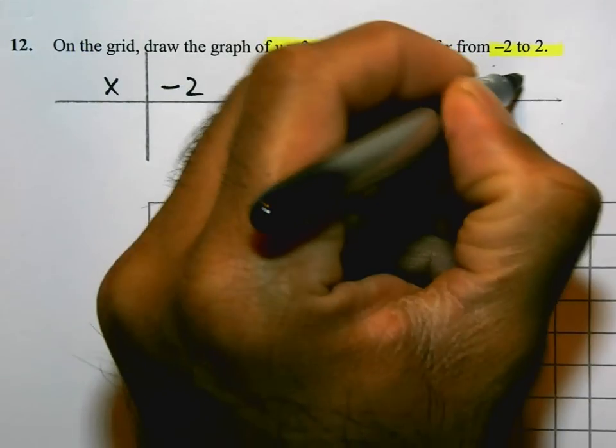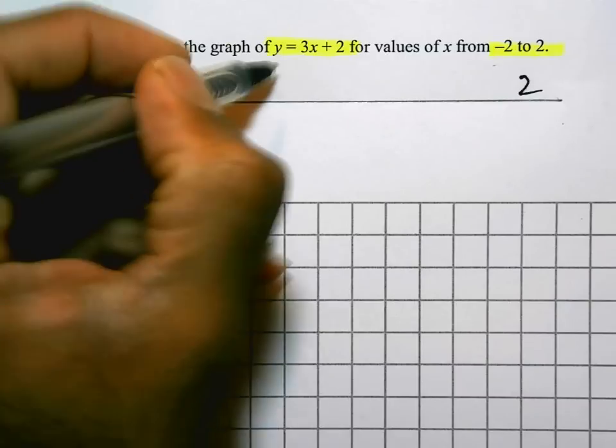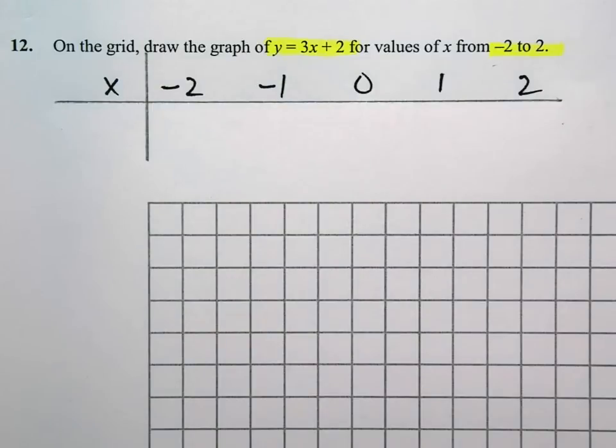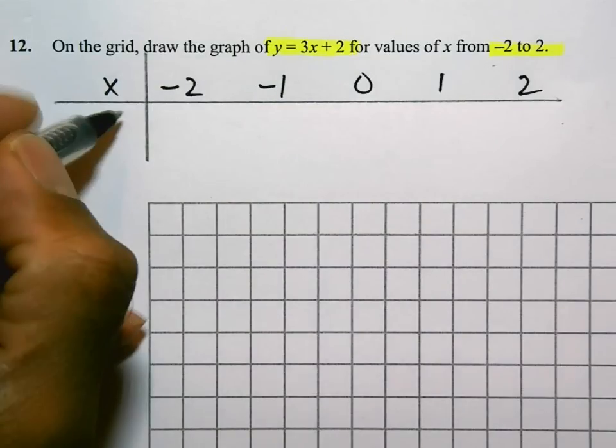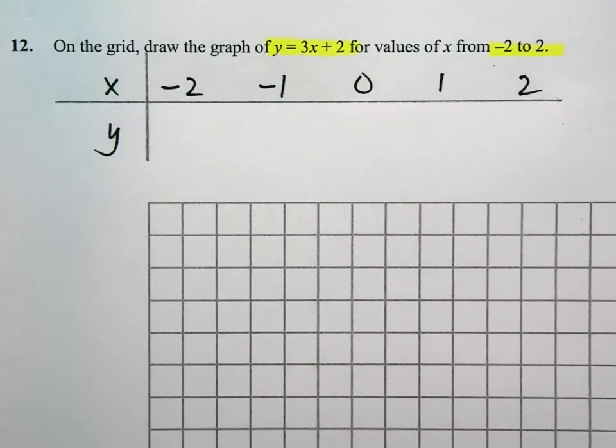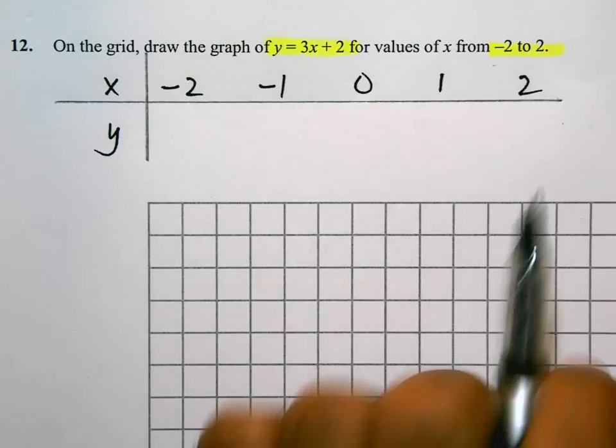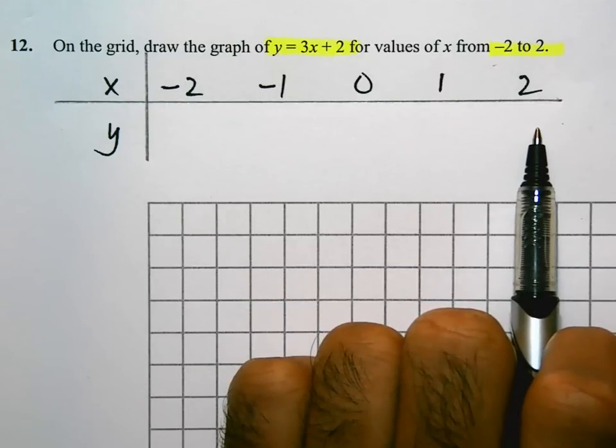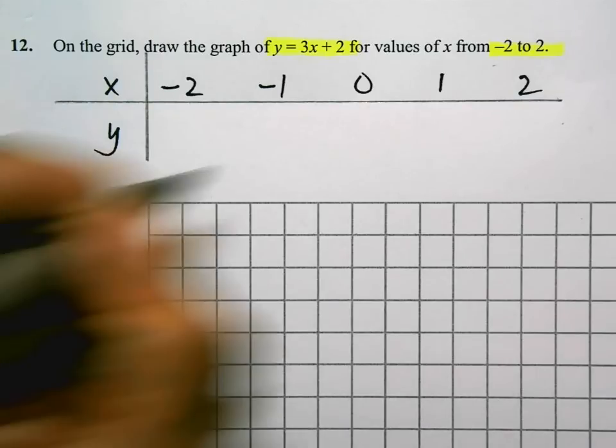I'm going to put these in: minus 2, minus 1, 0, 1 and 2. For each of these values I am going to work out the y value and then plot them on the graph. Always start from the top end, it's easier. The equation that we have is y equals 3x plus 2.